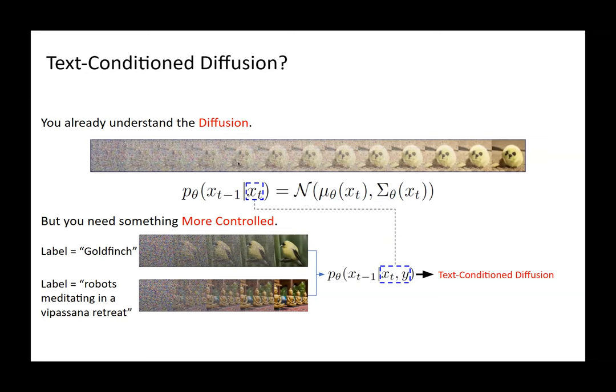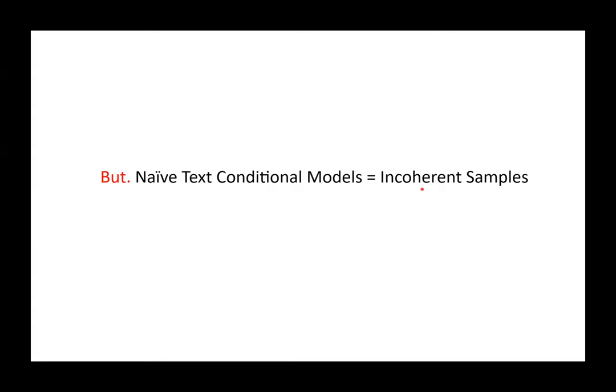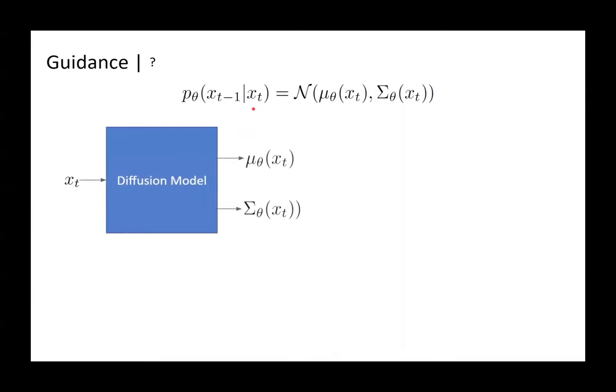The problem with naive text conditioning is it won't give you very coherent samples aligned with your labels — the generated image won't have the exact context you want. The solution is guidance. In guidance, you pass a noisy image through the diffusion model and get a mean and variance forming a normal distribution, then sample a lesser noisy image from it. Guidance shifts this mean so that samples match the text condition.